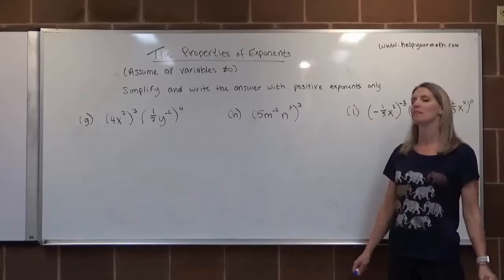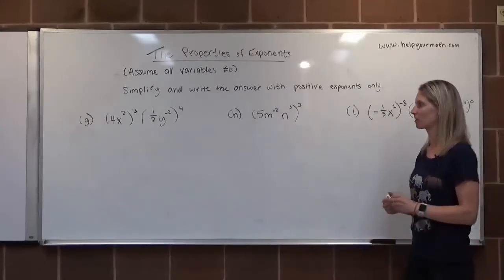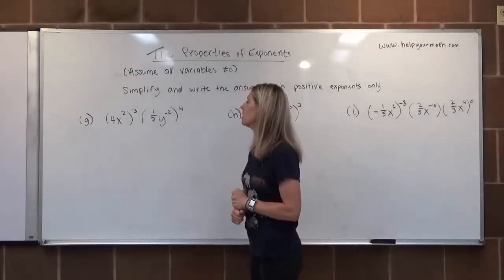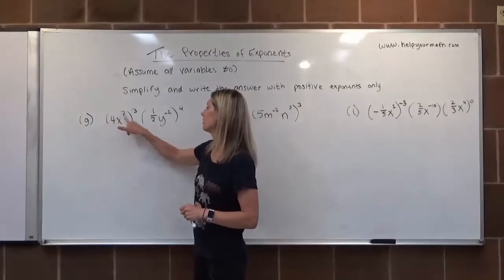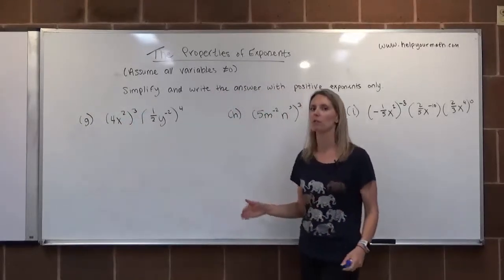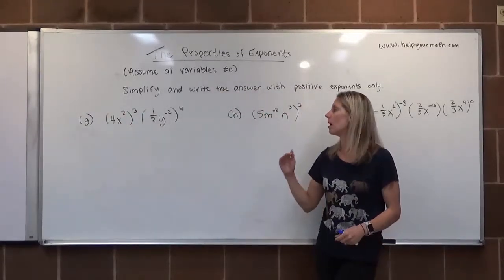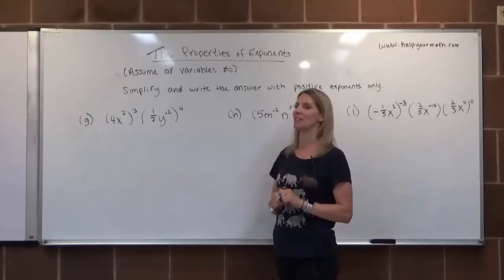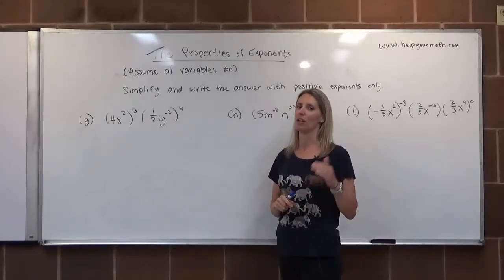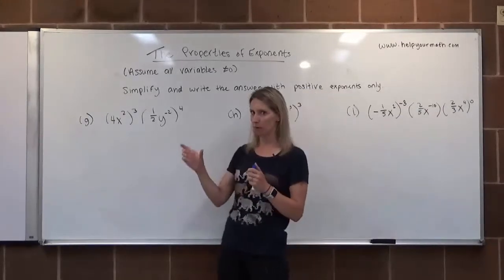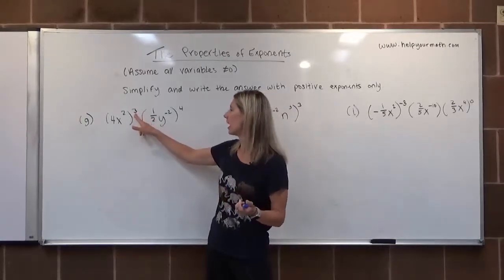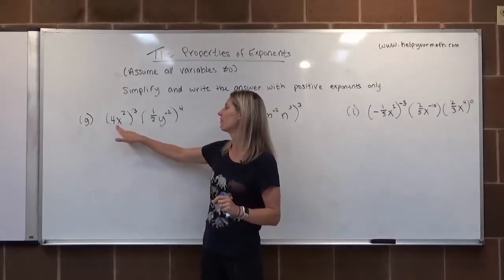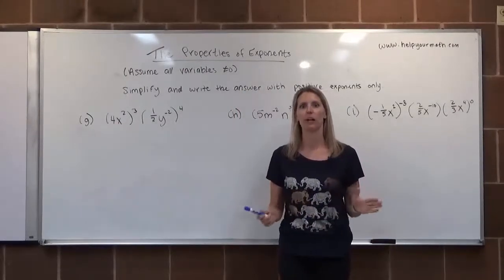Continuing with properties of exponents to simplify expressions. We always want to follow the order of operations. We see parentheses here with exponents. My suggestion: first take anything inside the parentheses that has a negative exponent and make it positive before distributing.